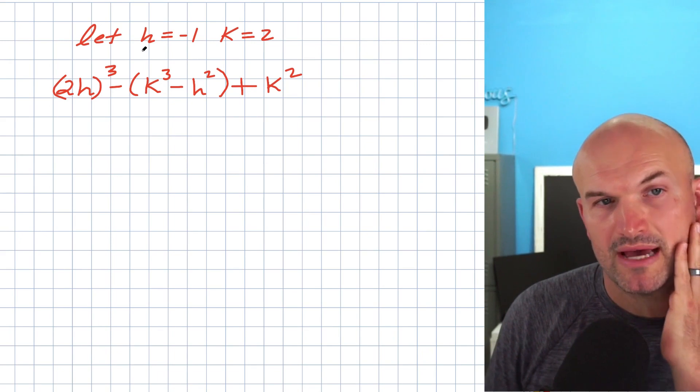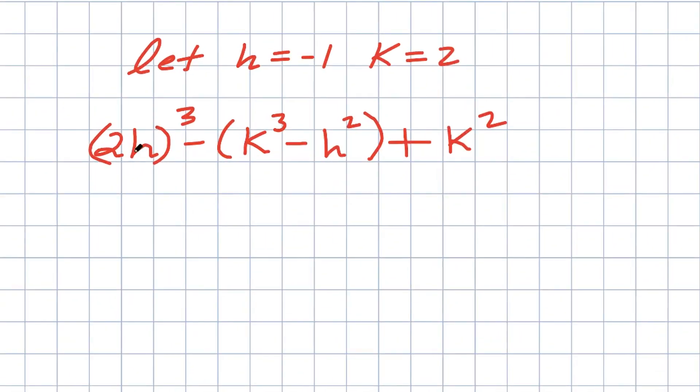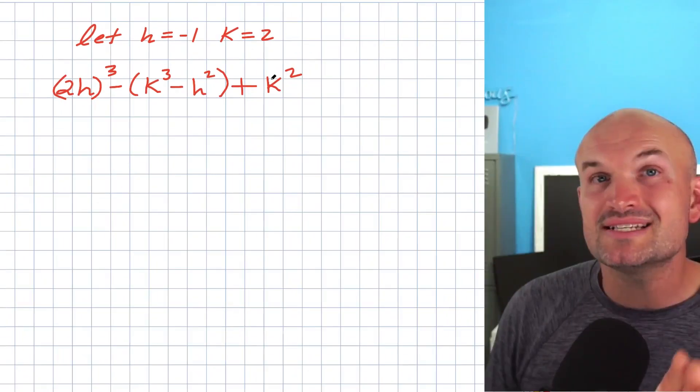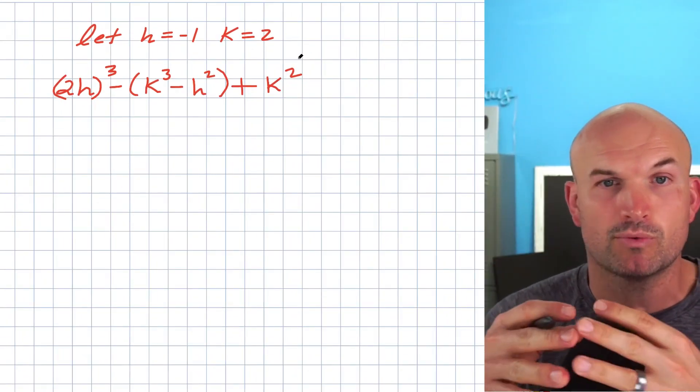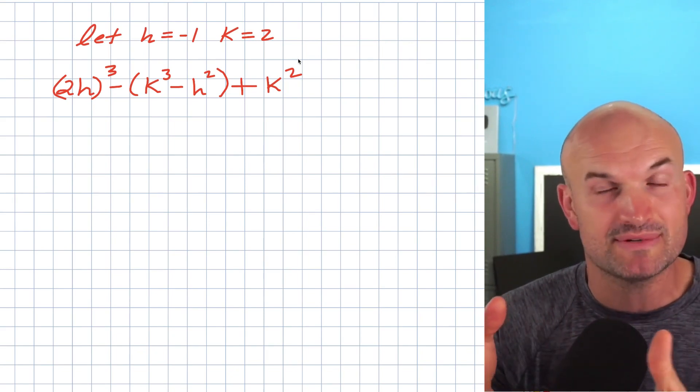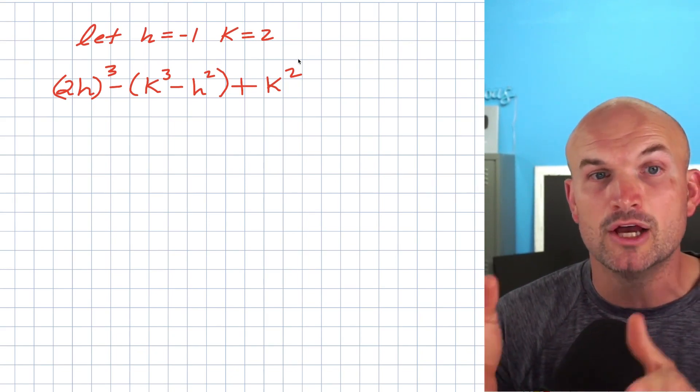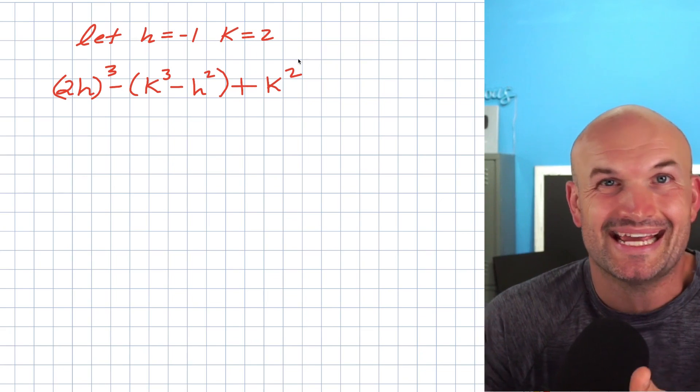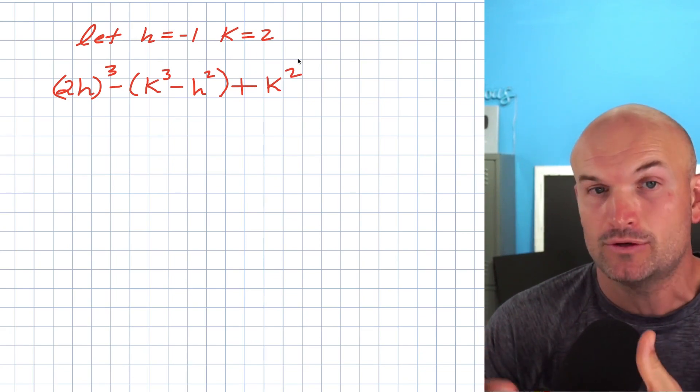So let's take a look at what we have here. We have a quantity 2h cubed minus a quantity K cubed minus h squared plus K squared. What we're going to do is plug in h and k whenever we see h and k. Any single time we see h and k, we're going to replace that with the values because it says let h equal negative one and let k equal two.